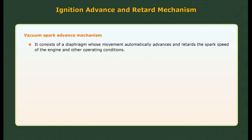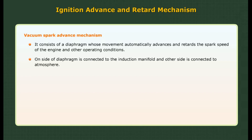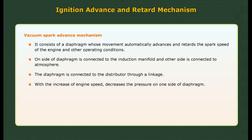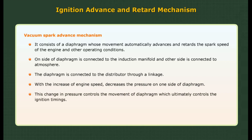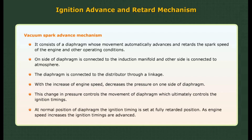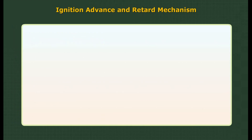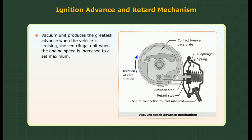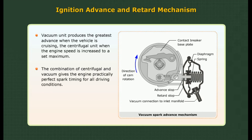Vacuum spark advance mechanism consists of a diaphragm whose movement automatically advances and retards the spark based on engine speed and other operating conditions. One side of the diaphragm is connected to the induction manifold and the other to the atmosphere. The diaphragm is connected to the distributor through a linkage. With increased engine speed, pressure on one side of the diaphragm decreases, controlling its movement and ultimately the ignition timing. At normal position, ignition timing is set at fully retarded. As engine speed increases, ignition timings are advanced. The vacuum unit produces the greatest advance when the vehicle is cruising, while the centrifugal unit advances when engine speed reaches a set maximum. The combination of centrifugal and vacuum gives practically perfect spark timing for all driving conditions.